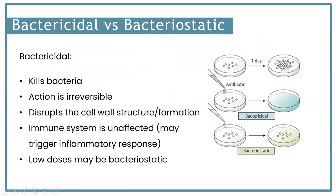The final way we can classify bacteria is bactericidal or bacteriostatic. Bactericidal antibiotics kill bacteria - the action is irreversible and disrupts the cell wall or structure formation. When you treat bacteria with bactericidal antibiotics, the immune system is unaffected because these antibiotics kill the bacteria and they go away on their own.